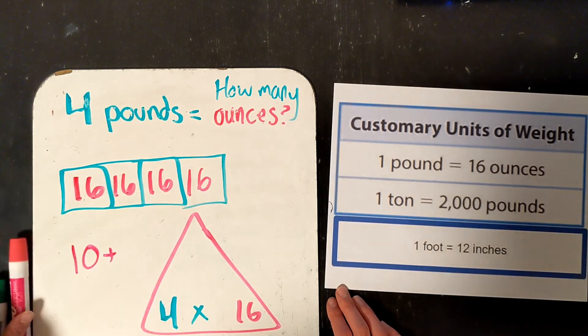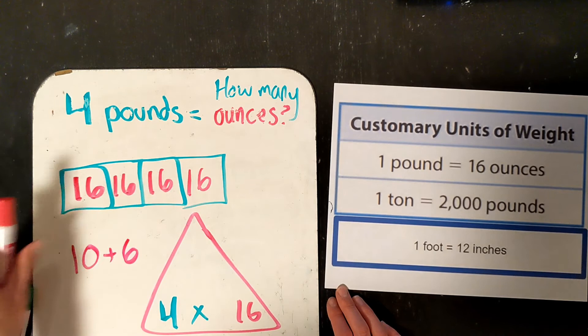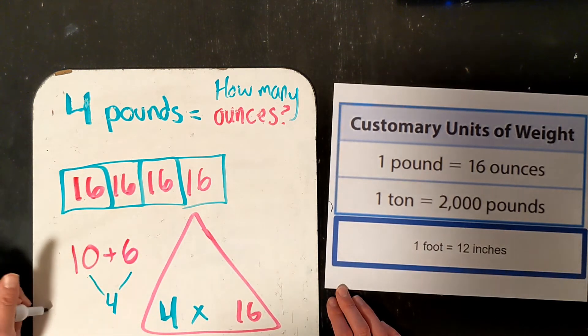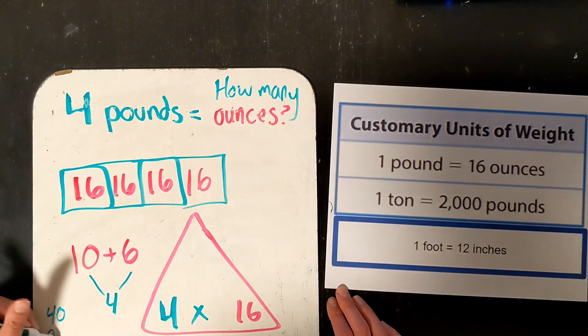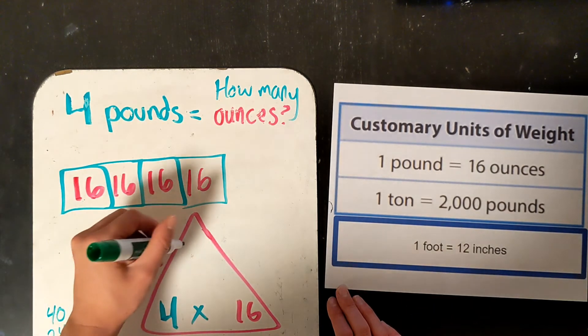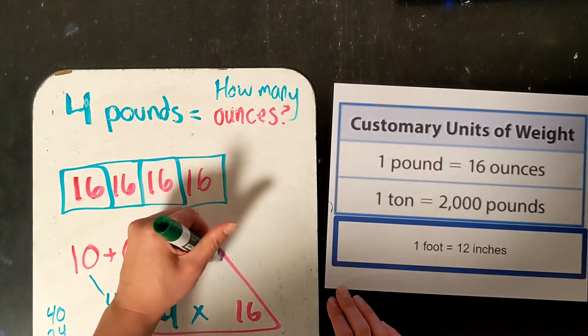And you can definitely use a different strategy. 10 times 4 is 40. 6 times 4 is 24. 40 plus 24 is 64. So in 4 pounds, I have 64 ounces.